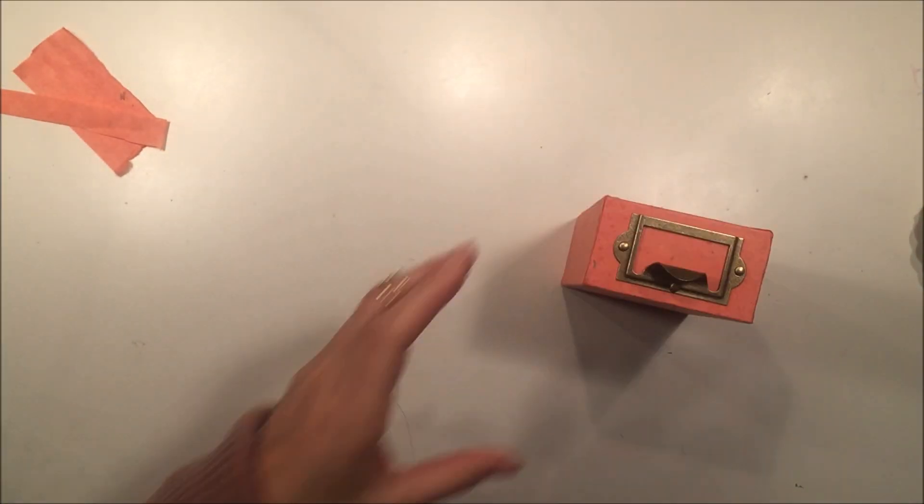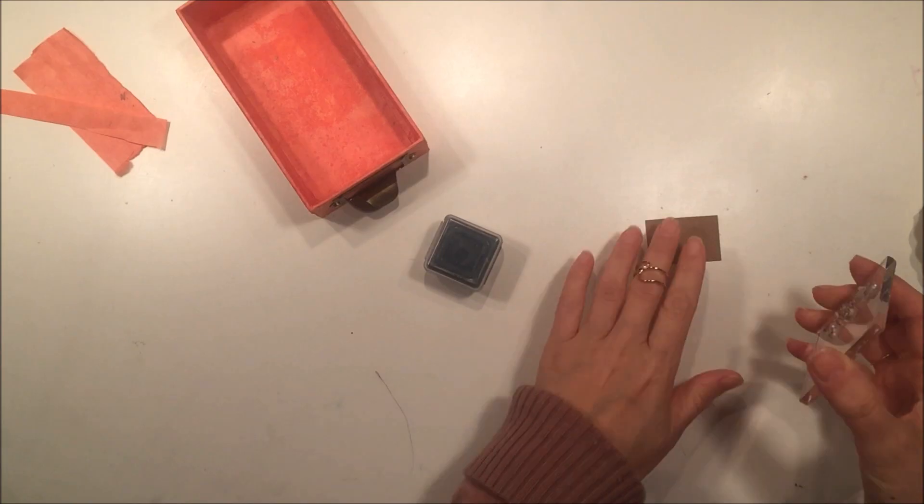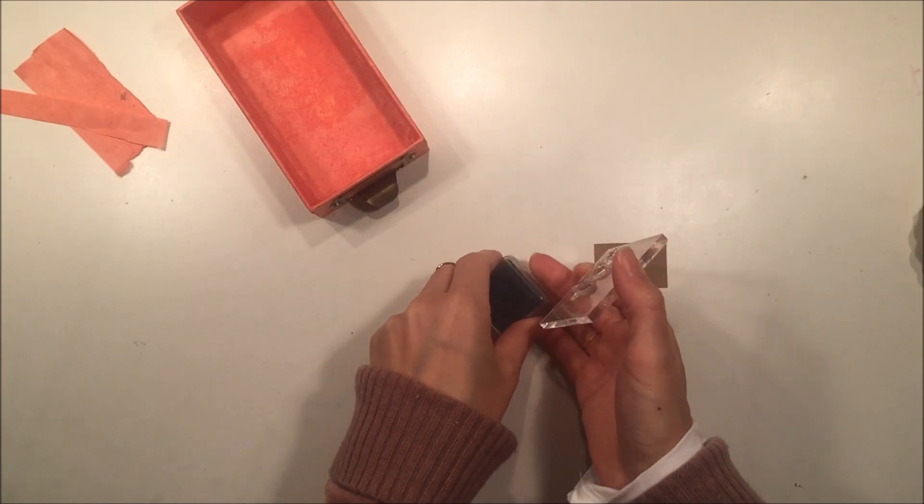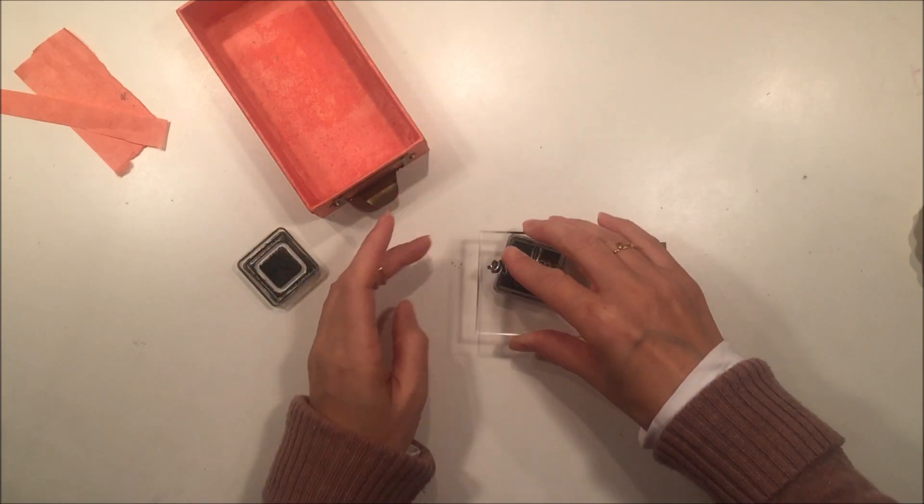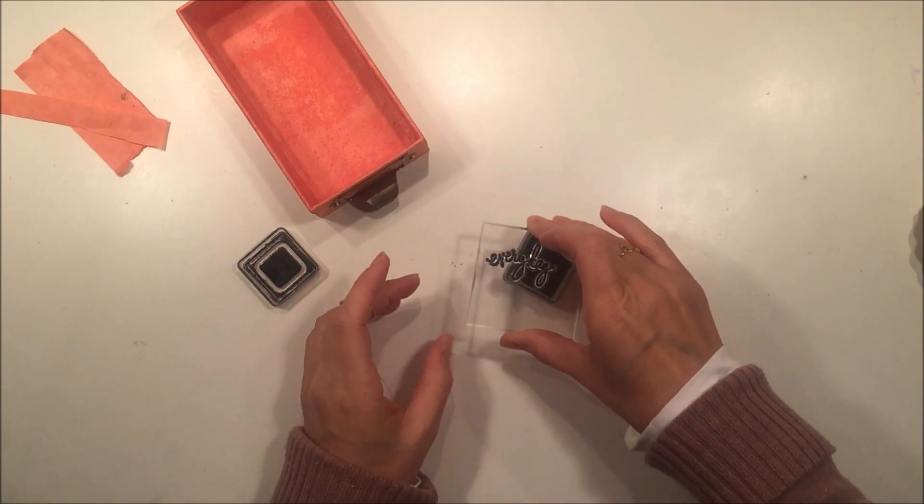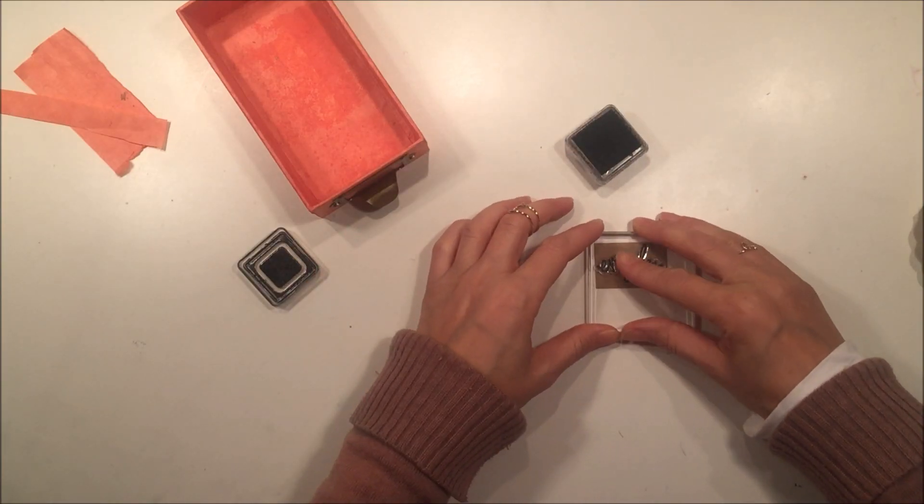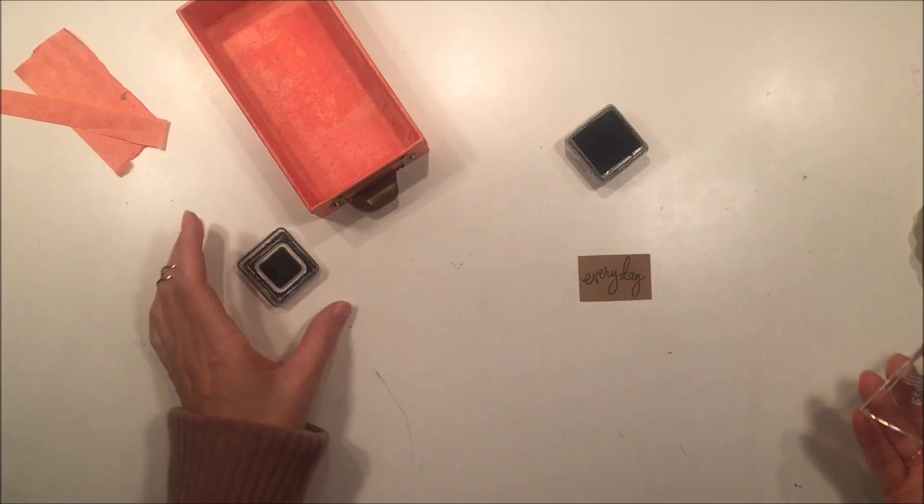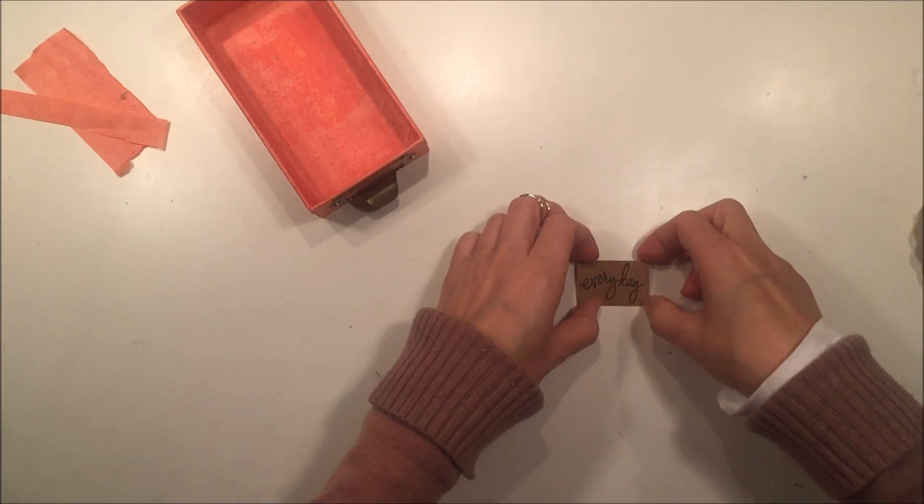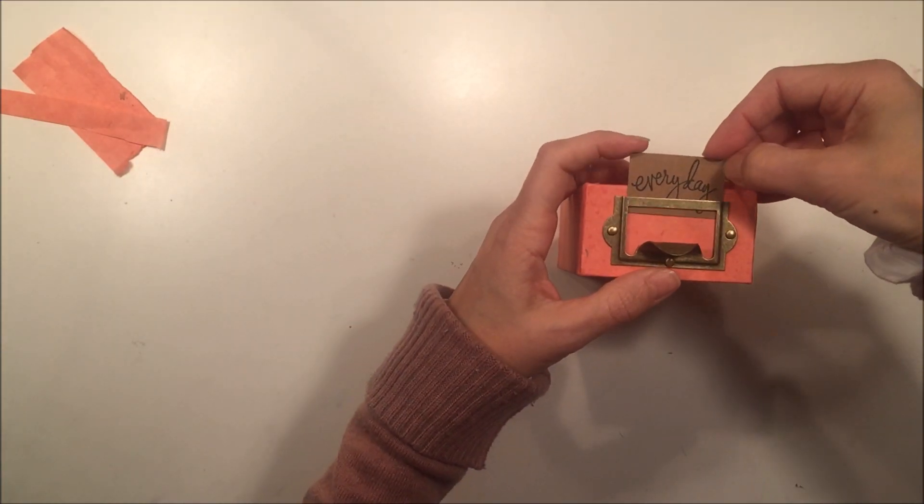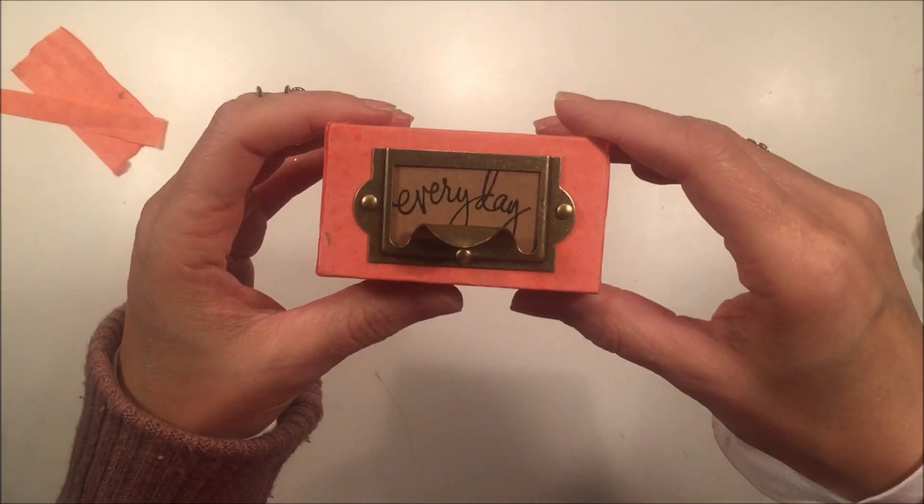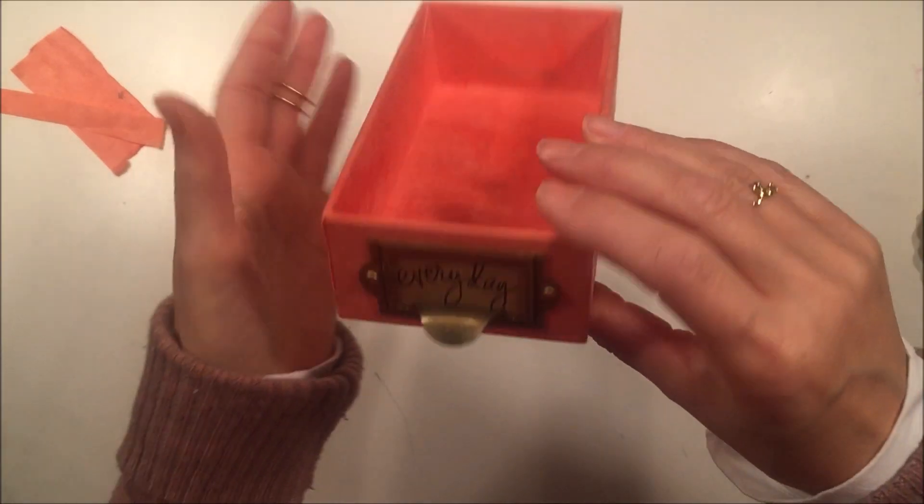And now I just want to add a label. Since I'm not sure what these boxes are going to be used for, I'm adding kind of a generic label. This one says everyday and it's a Heidi Swapp stamp that you can pick up at Michaels and probably online at scrapbook.com. So I'm just going to fit that in place and this box is all done.